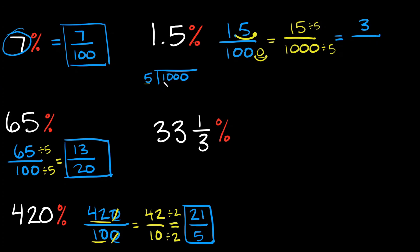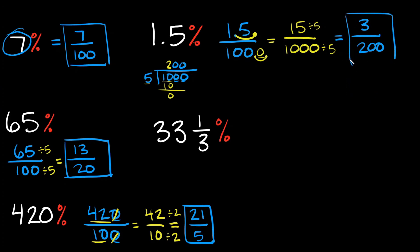Let's work out 1,000 divided by 5: 5 doesn't go into 1, but it goes into 10 two times, with no remainder. The remaining zeros just come straight down. So 5 divides into 1,000 two hundred times — 1,000 divided by 5 equals 200. We can't reduce this anymore, so the final answer is 3 over 200.